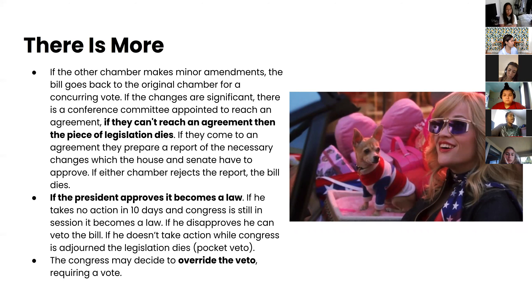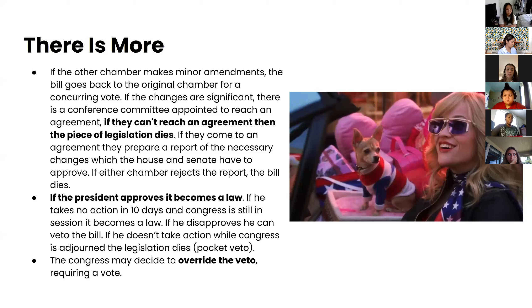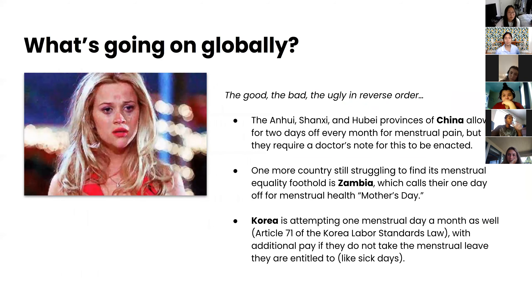If either chamber rejects the conference report, the bill dies. If the bill survives, it goes to the president. If the president approves it, he signs it and it becomes a law. If no action is taken within 10 days while Congress is still in session, it also becomes a law. If the president disapproves, he can veto the bill. If he takes no action while Congress is adjourned, the legislation dies — this is called a pocket veto. Congress may also decide to override the veto, which is a separate and complicated process.